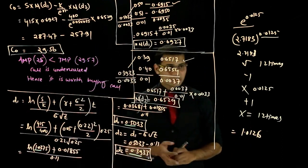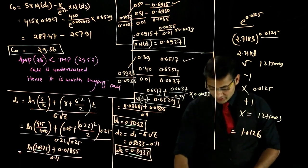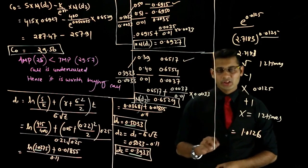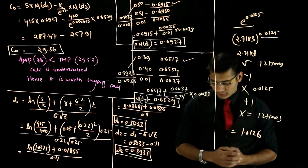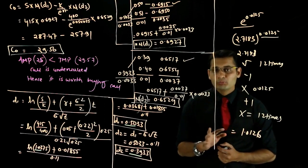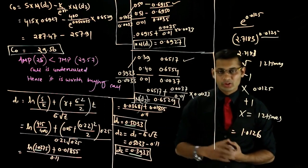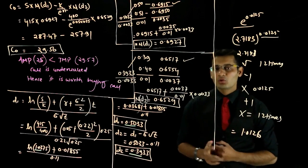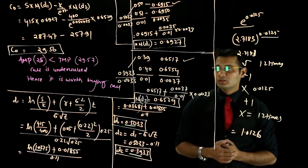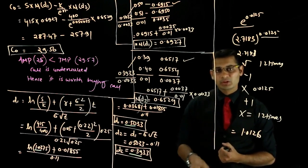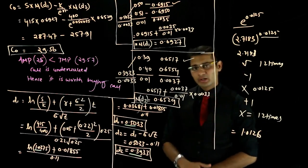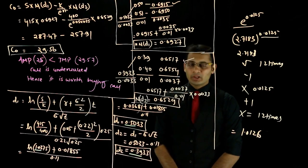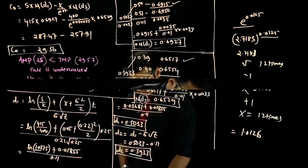Actual market price of call = Rs.25, which is less than theoretical price of Rs.29.57. इसलिए call option Rs.25 में खरीदना worth है — undervalued है। यह jumbo question है Black-Scholes model का जिसमें सारी possible variations cover हो जाती हैं।